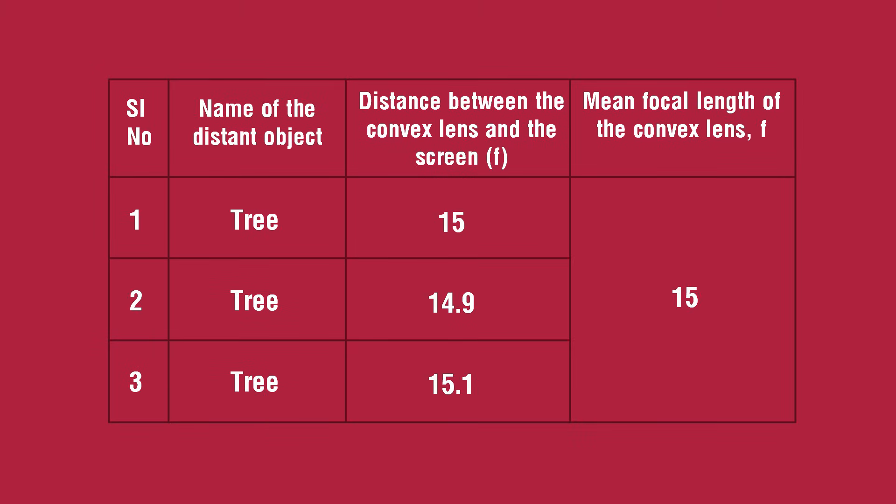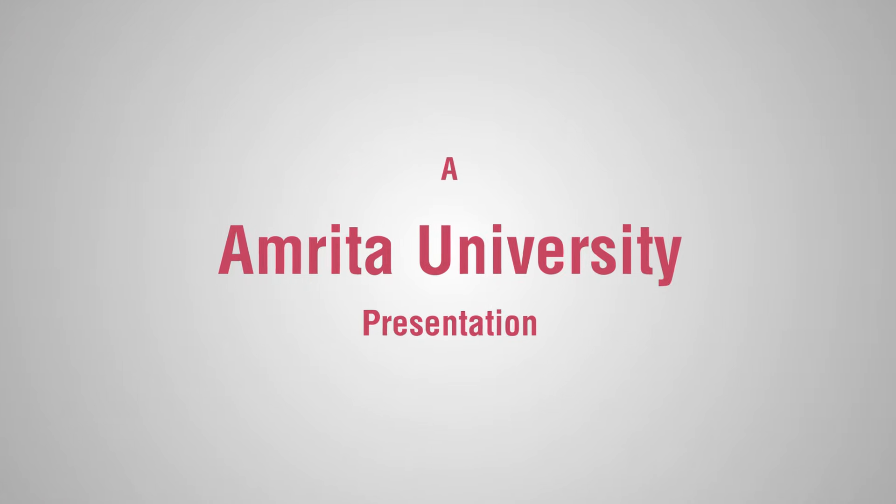Find the mean value of focal length. Result: The focal length of the given convex lens is 15 cm.